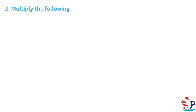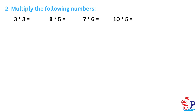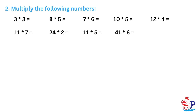Exercise 2: Multiply the following numbers. 3 times 3, 8 times 5, 7 times 6, 10 times 5, 12 times 4, 11 times 7 equals 24. 24 times 2, 11 times 5, 41 times 6, 82 times 4, 62 times 3, 73 times 2.